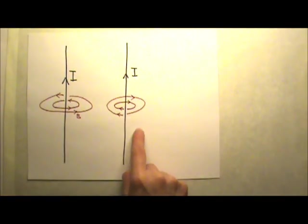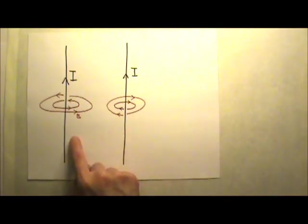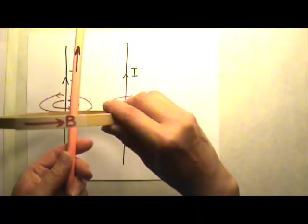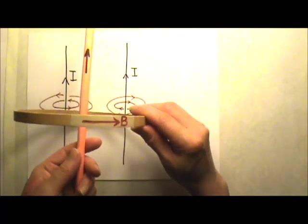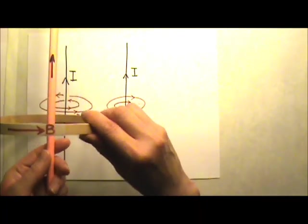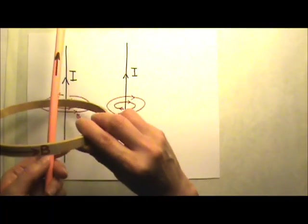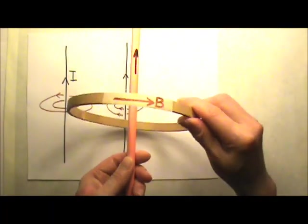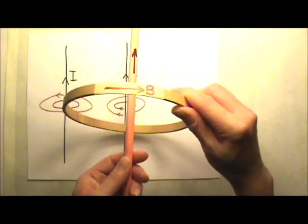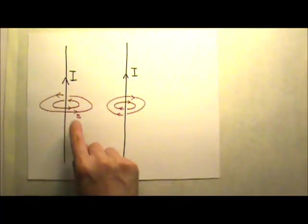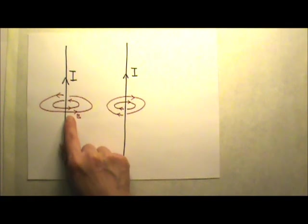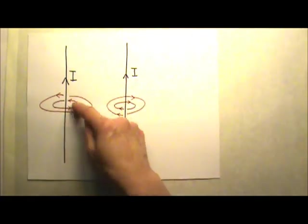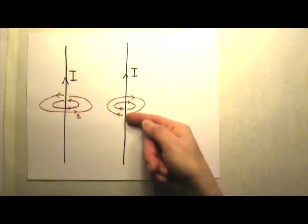These two figures may look like they contradict each other, but they do not. This ring represents a circular magnetic field line. The figure on the left is a view from slightly above, and the figure on the right is a view from slightly below. In both figures, the magnetic field goes to the right in the front and goes to the left in the back.